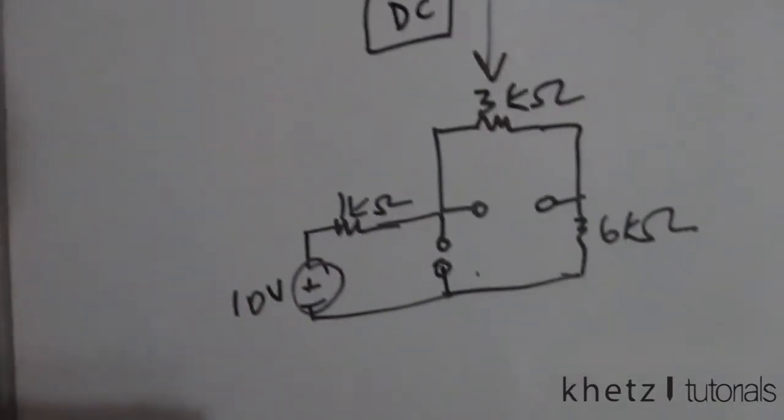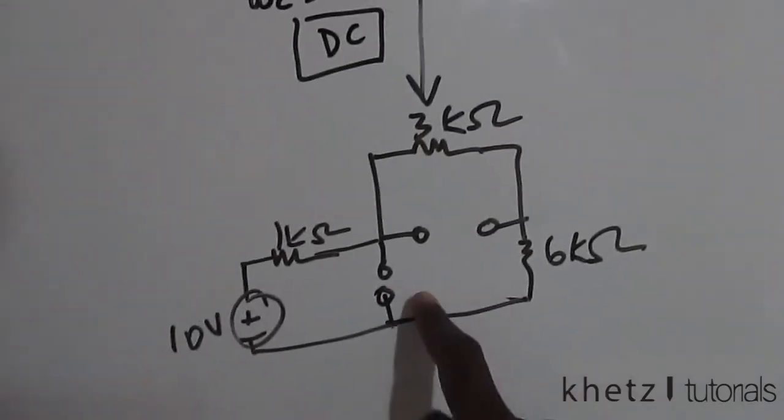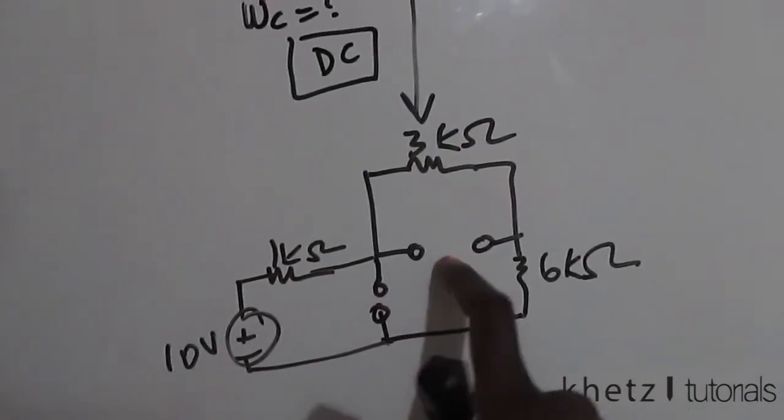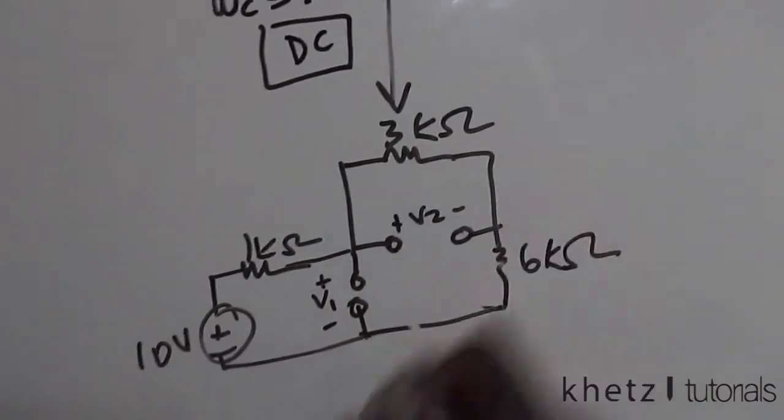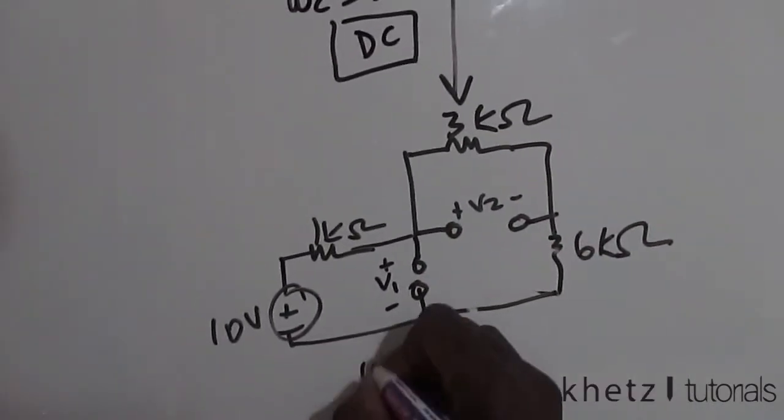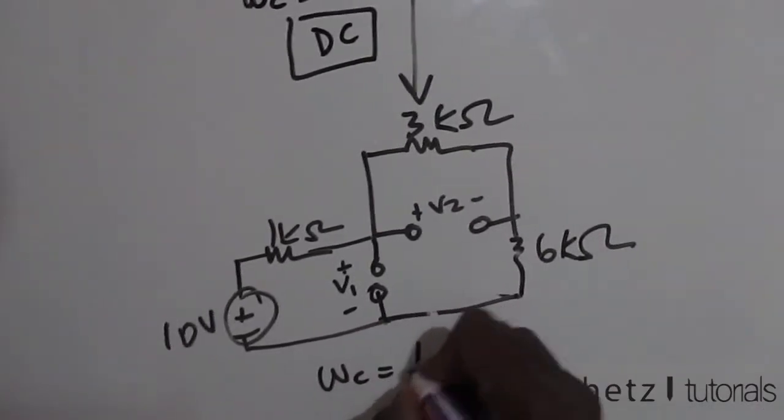What we're interested in doing is finding the voltage across these two points. Let's call this v1 and this v2, because the formula for energy of a capacitor is ½CV².